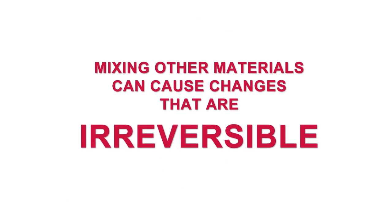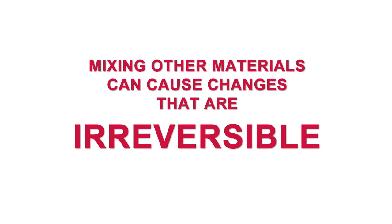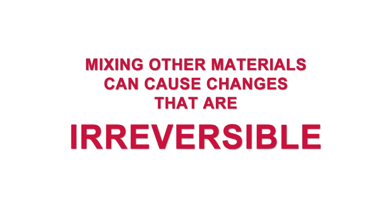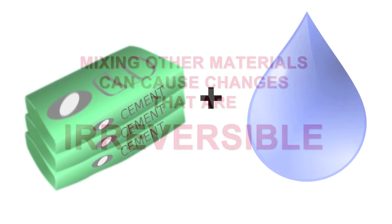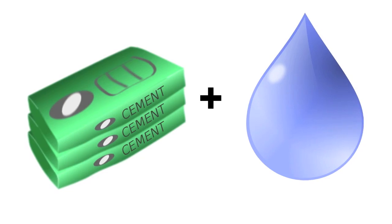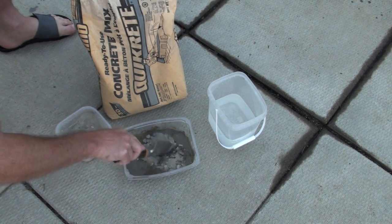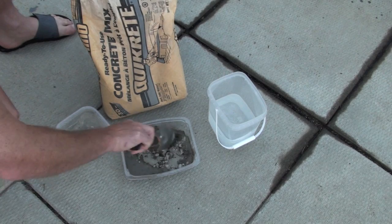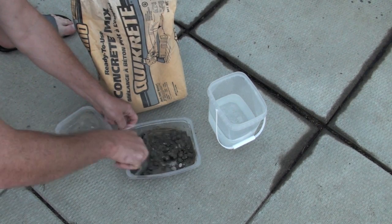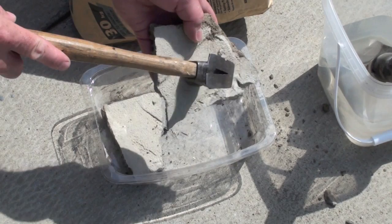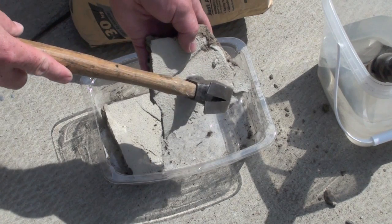When other materials are mixed together, changes can happen that are difficult to reverse. For example, if cement is mixed with water, it sets permanently into solid concrete. Concrete doesn't melt like ice, and the water cannot be evaporated to get back the cement. So this is an irreversible change.